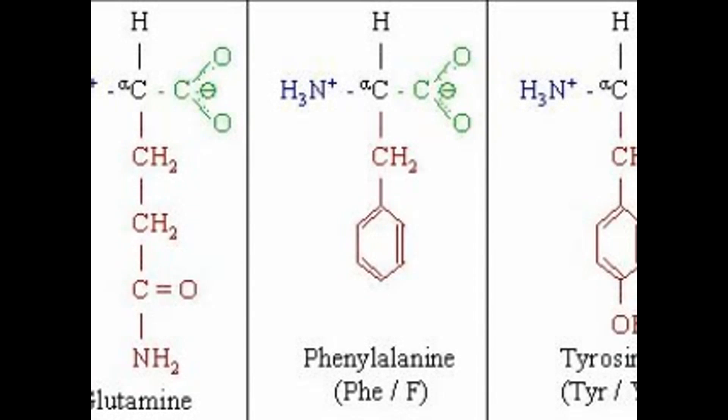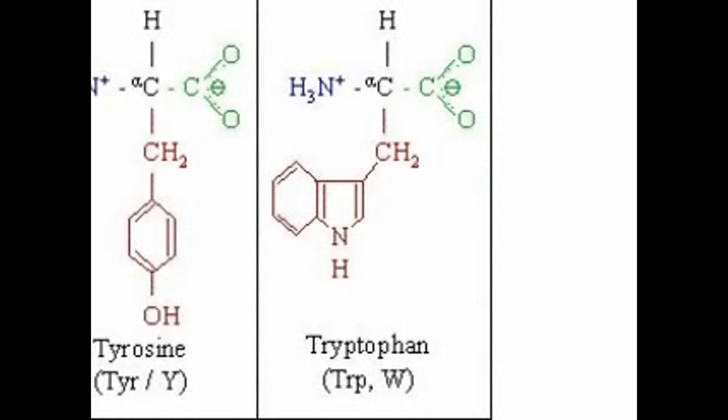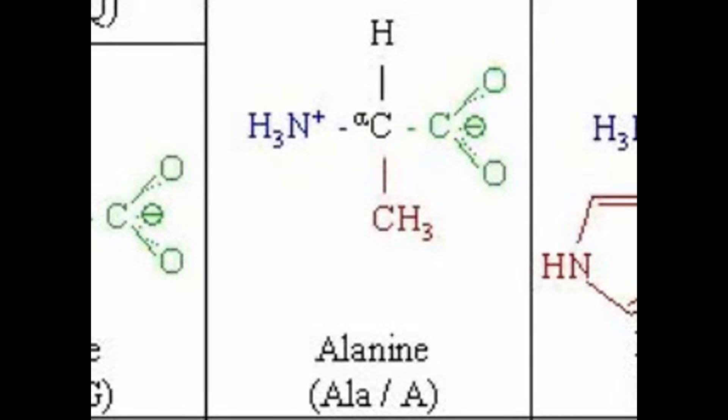You may have heard the term 'carbon-based life form,' referring to humans and other creatures. That term comes from the fact that all 20 amino acids — the building blocks our body uses to build cells, muscle, and tissue — have a carbon molecule at the center of each one.